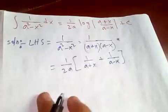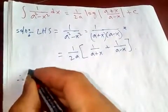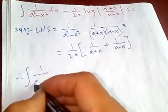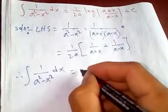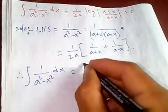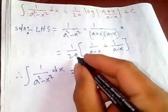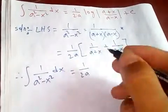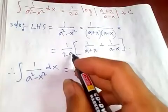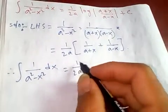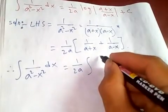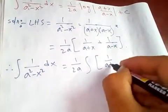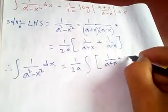Therefore, the integral of 1/(a²-x²) dx equals (1/2a) times the integration of [1/(a+x) + 1/(a-x)]. The 1/2a comes out before the integration because a and 2 are constants.